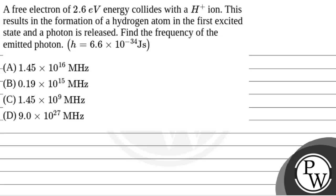Hello. Let's see the question. The question says that a free electron of 2.6 electron volt energy collides with a H plus ion. This results in the formation of a hydrogen atom in the first excited state and a photon is released. Find the frequency of the emitted photon.